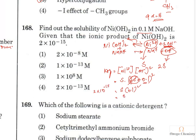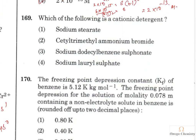Therefore s = Ksp/(0.1)² = (2 × 10⁻¹⁵)/(10⁻²) = 2 × 10⁻¹³ mol/L. Option 4 is the right answer.